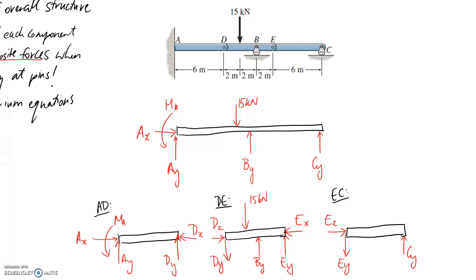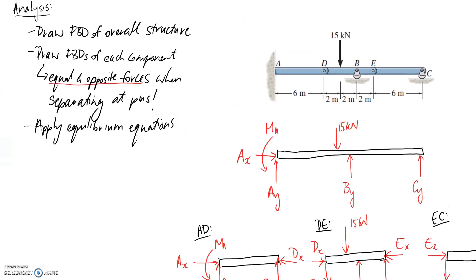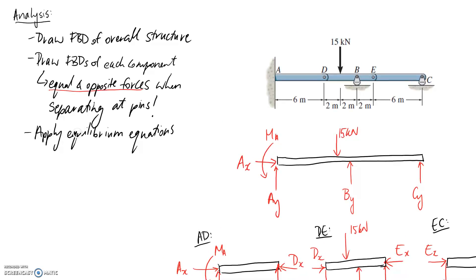All right. So now we've ended up with three additional free body diagrams with which we're able to work. So if we go back, we still have our ability to apply the equilibrium equations. Remember, we have the three of them. So sum of forces in X, sum of forces in Y, and sum of moments have to be zero. And this needs to be true for every single free body diagram that we've drawn.